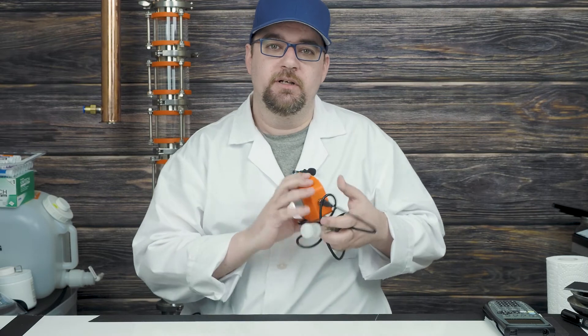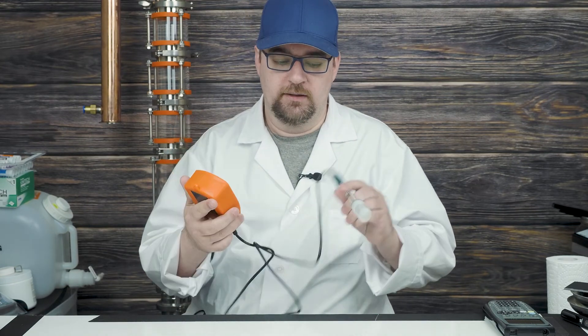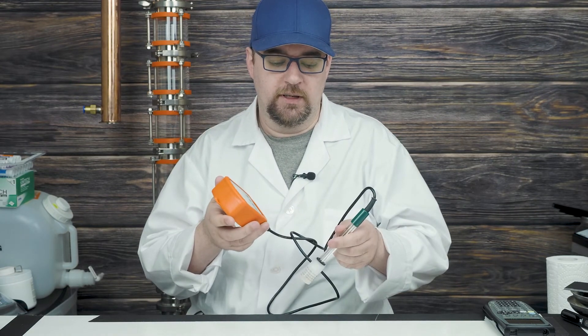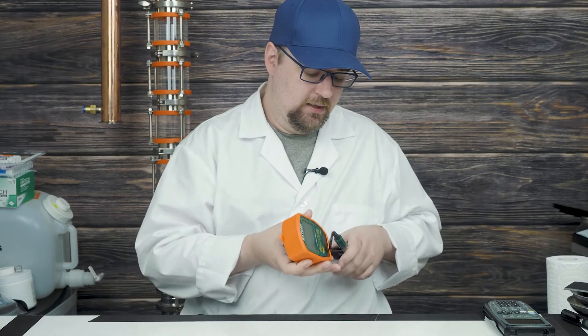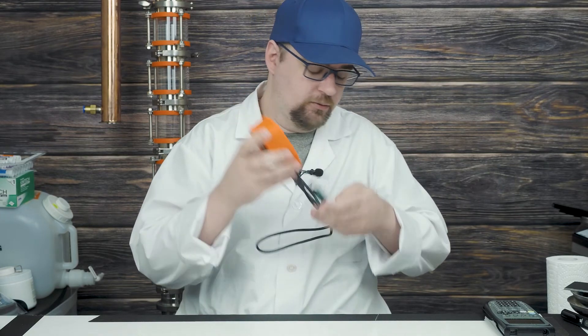You measure pH with an instrument called a pH meter, like so. This is the electrode that you place in the solution. This is the meter part. It has a replaceable electrode, which is handy.